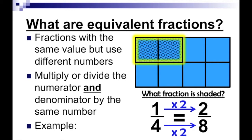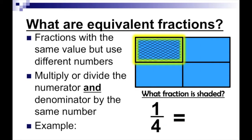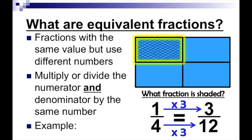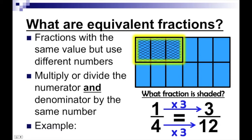Let's take another example. Let's say we still have one-fourth, but this time we multiply both the numerator and denominator by three. That's going to give us three-twelfths. Each of my pieces will now have three pieces in it — three, six, nine, twelve — so twelve total pieces. And what's one-fourth of those twelve pieces? That's going to be three.